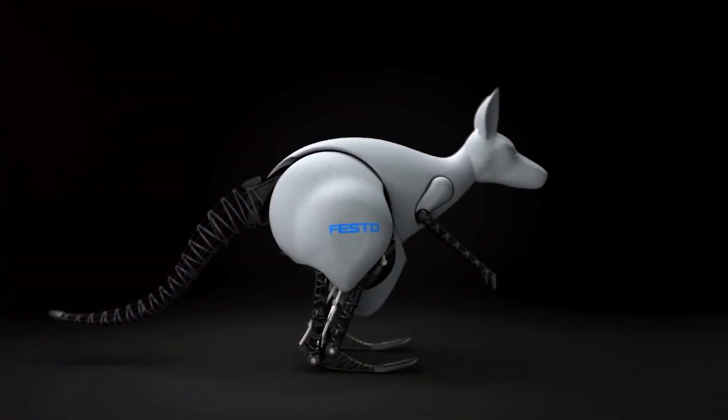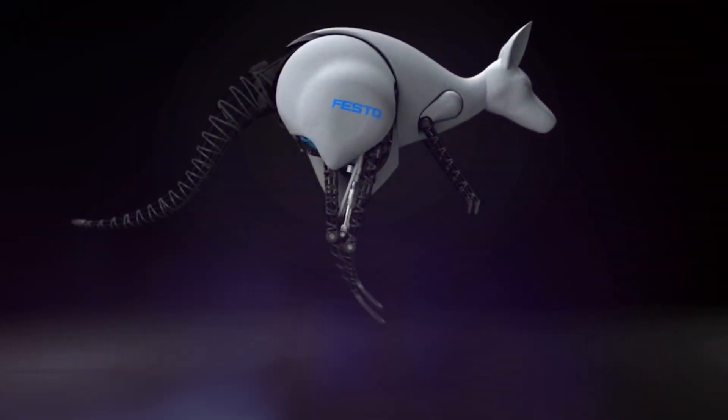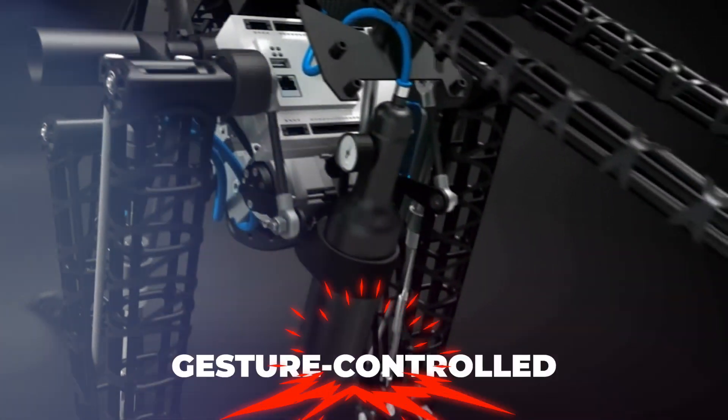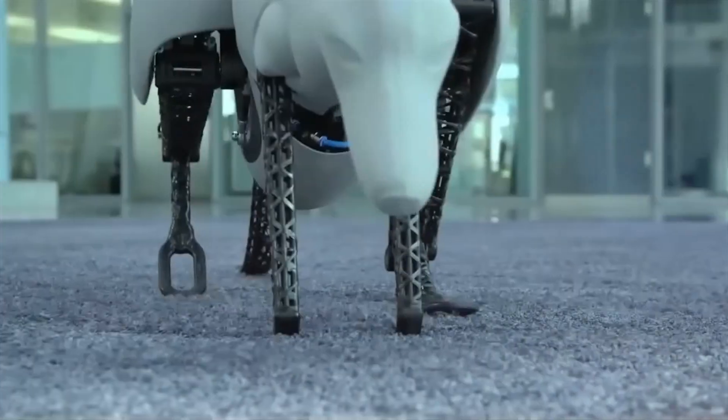German engineering company Festo took a direct approach to demonstrating how this concept can be applied to machines by literally building a kangaroo. The prototype is gesture controlled and uses commercially available wristbands with sensors, such as those used to control drones.